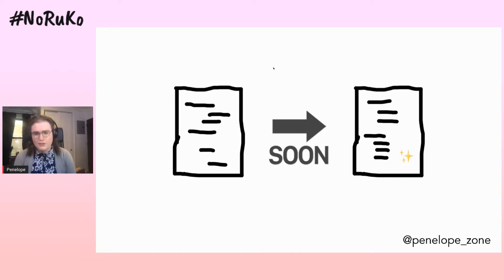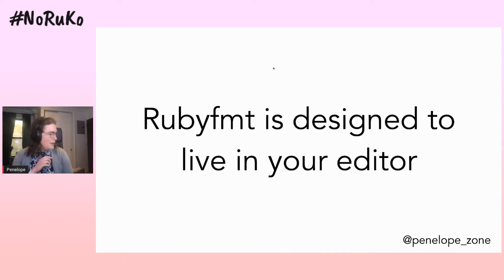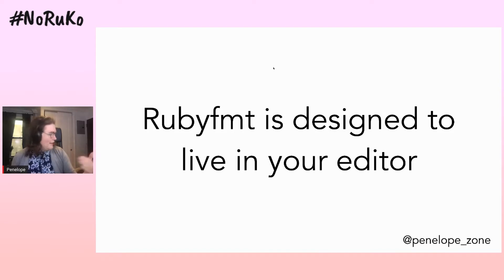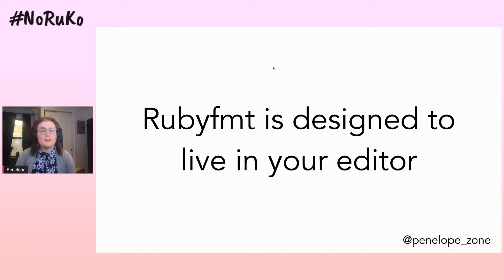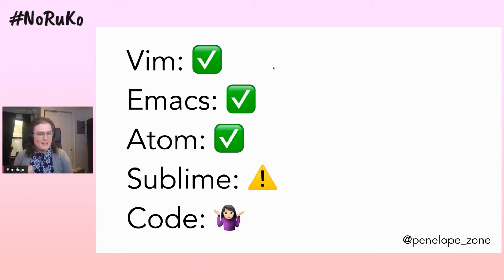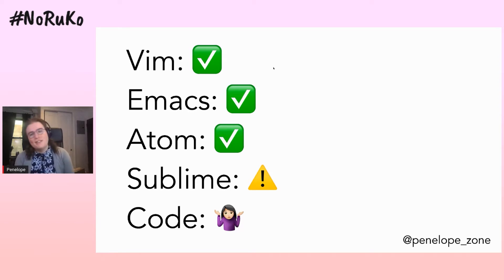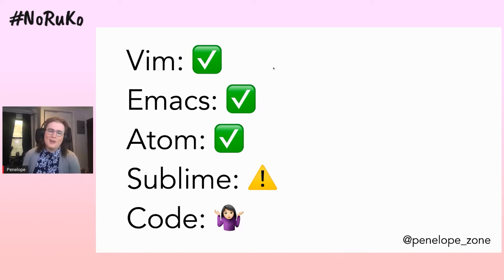Ruby Format is a program designed to consume Ruby source code, transform it, and output semantically equivalent Ruby source code with cleaned-up formatting. A core philosophy is that formatting should happen as you're editing, not in CI. From the very beginning, Ruby Format was designed to live in your text editor. Today we have strong support for Vim, Emacs, and Atom. Sublime support is questionable, and VS Code support is unclear — if you use those, please come to the Ruby Format issue tracker and let us know.